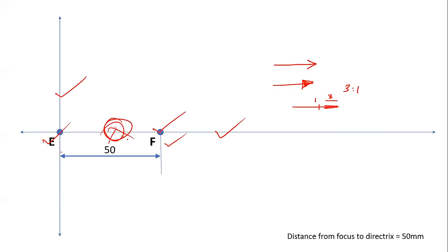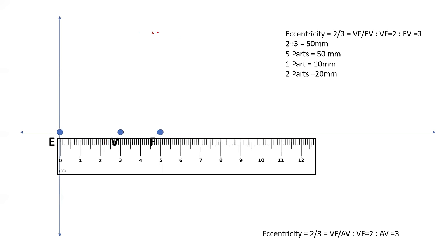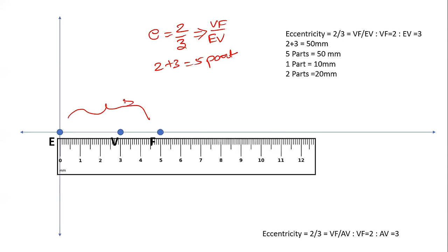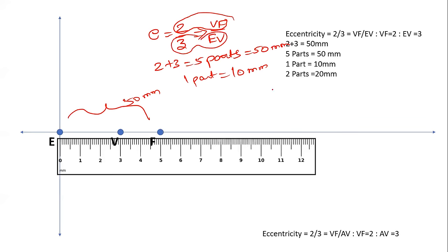Now mark the vertex point V between E and F. Eccentricity is 2/3, so VF/EV = 2/3. The total number of parts is 2 + 3 = 5 parts. The total distance EF = 50mm, so 5 parts = 50mm, meaning 1 part = 10mm. Therefore VF = 2 parts = 20mm, and EV = 3 parts = 30mm.